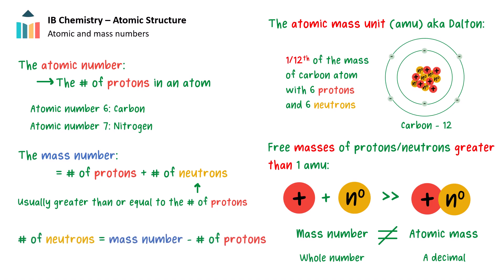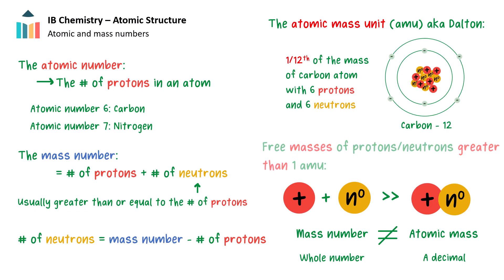Because proton and neutron masses are very small, it's simpler to measure the mass in atomic mass units, also known as Daltons. 1 amu is equal to 1/12th the mass of the most common carbon atom, which contains 6 neutrons and 6 protons. Free protons and neutrons actually have masses slightly larger than 1 amu. The mass decreases when protons and neutrons form nuclei because some of the mass is turned into energy. This energy is released from the nucleus as the nucleons attract each other and the nucleus becomes more stable.